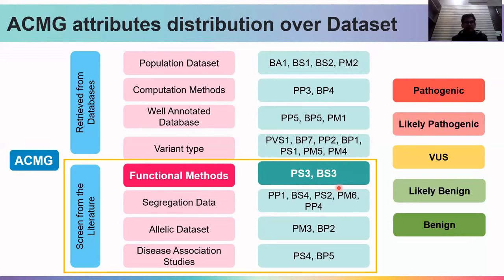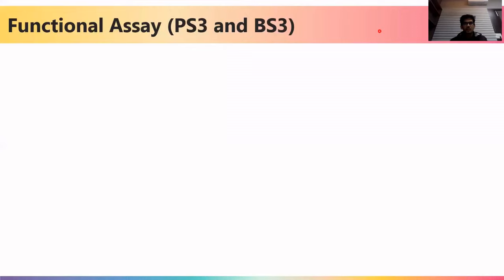Now let's start with the functional methods, using PS3 and BS3 as attributes. The functional assay has two ACMG attributes: PS3 (pathogenic strong 3) and BS3 (benign strong 3). Before going into detail about PS3 and BS3, let's go through some basic terminology used in functional assays.